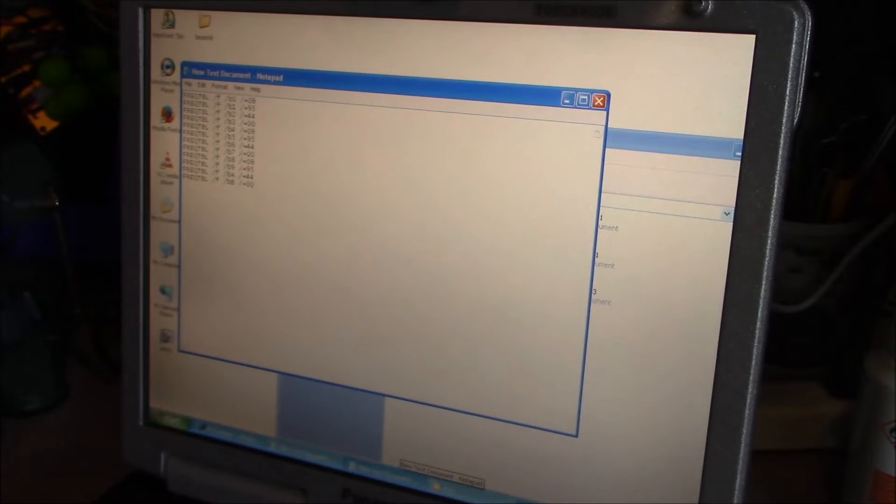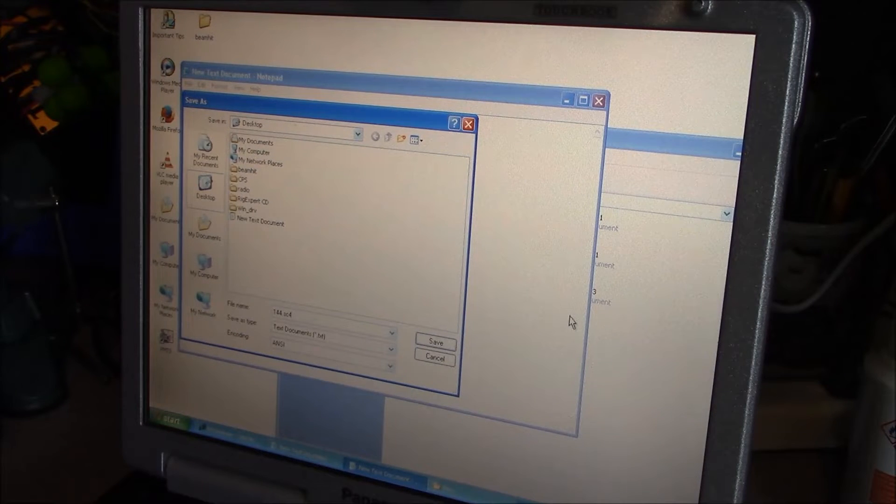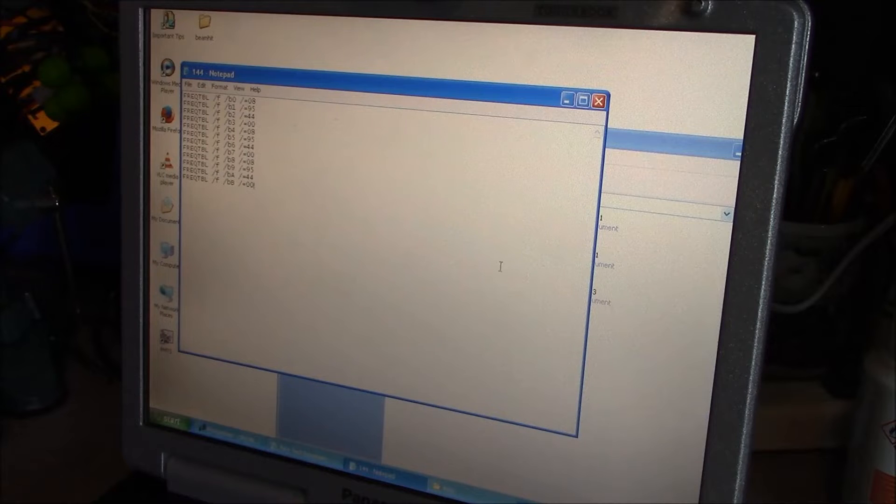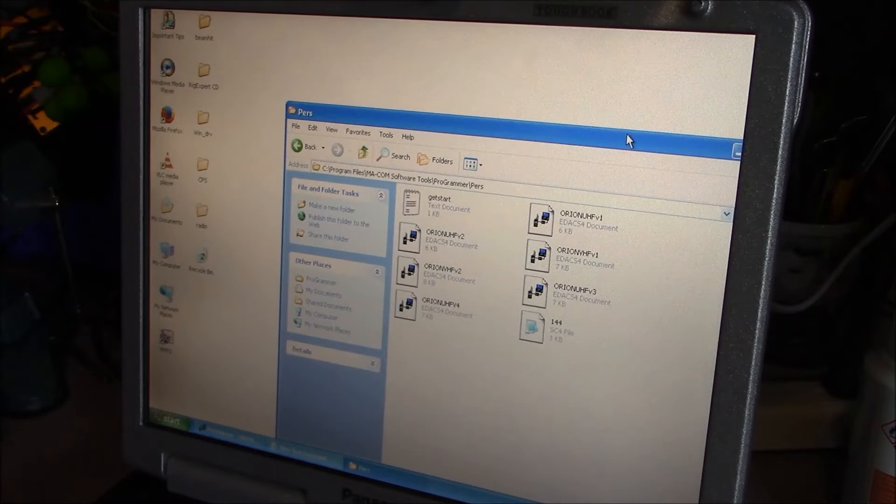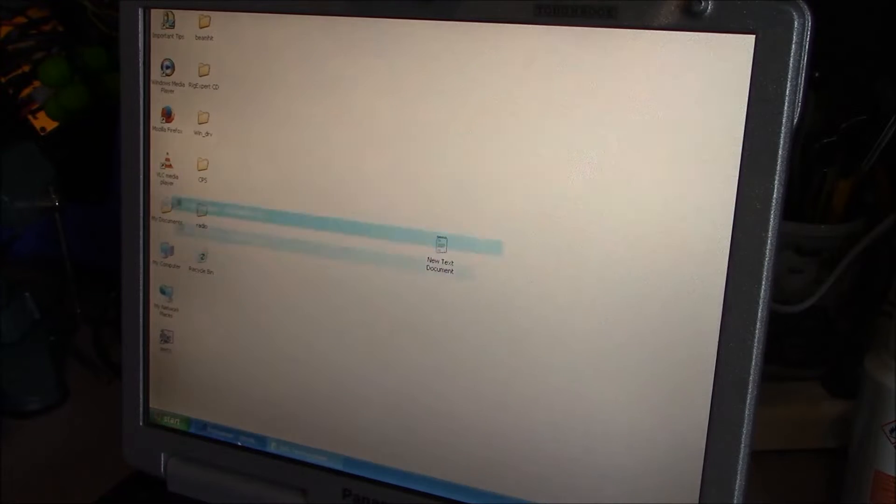Okay we've created our SC4 file. What we're going to do is save it. And let's call it 144.sc4 and we want to save it in the personality folder of our Maycom software. And you can see here that we now have 144 as our SC4 file. Open up our software.